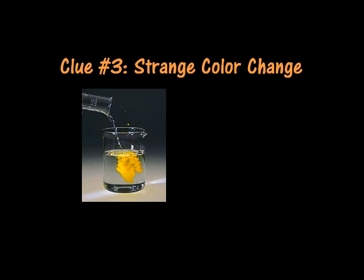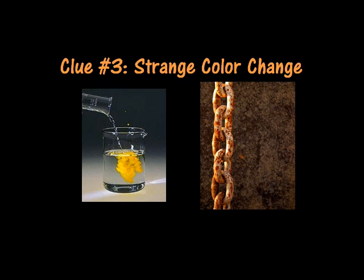The third clue is an unexpected color change. Here's a physical change first: if I stirred Kool-Aid powder into water, well of course it's going to change color — but we expect that to happen because the Kool-Aid powder was colored. But what if I mixed two clear liquids together and the mixture turned yellow? I wouldn't expect that to happen — that's a sign of a chemical change. Rusting metal, burned toast, and firecrackers are all examples of color changes caused by chemical reactions.